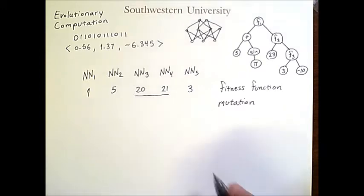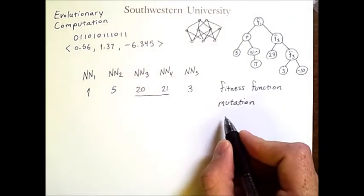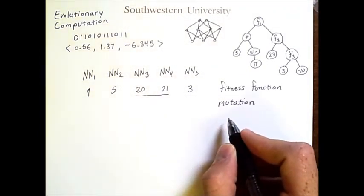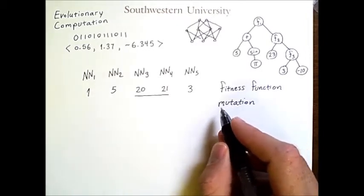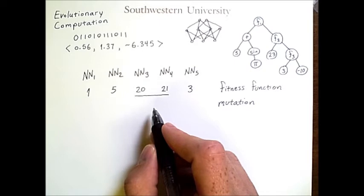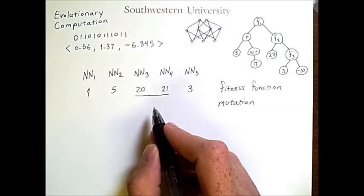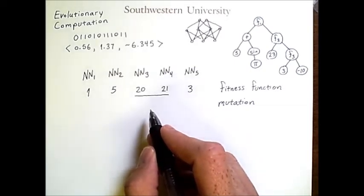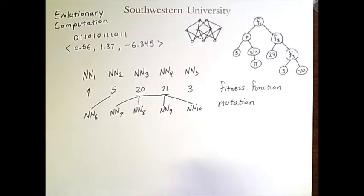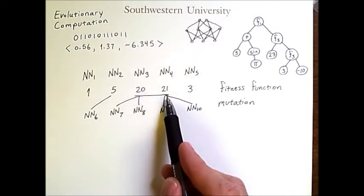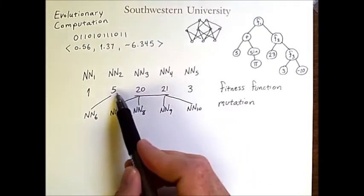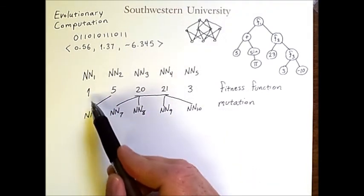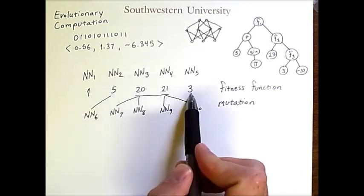The way we choose which individuals to mutate is via selection, which is an abstraction of natural selection. Essentially, we favor individuals with higher scores, and we create new offspring individuals by mutating them. Notice that these two individuals each have two offspring. This individual has one offspring, and these individuals have no offspring.